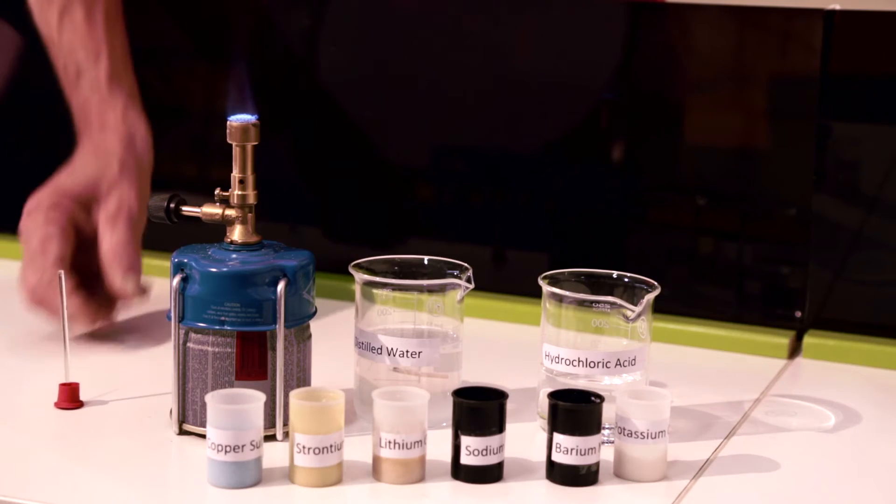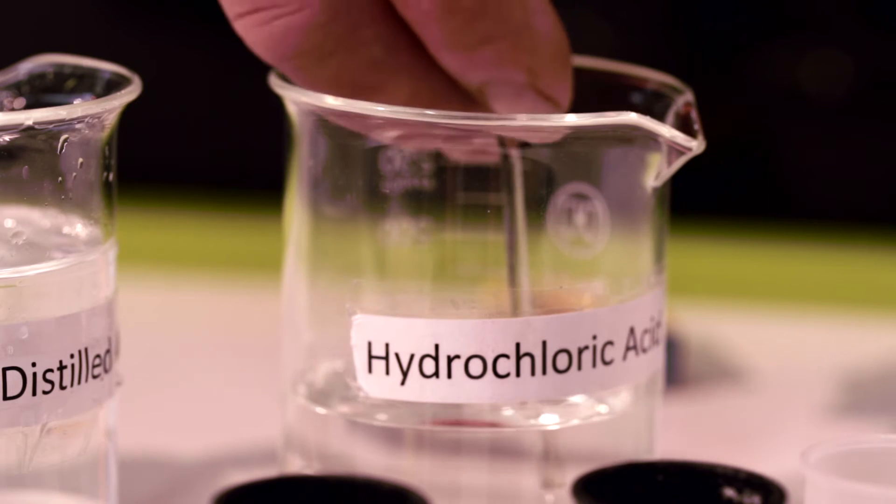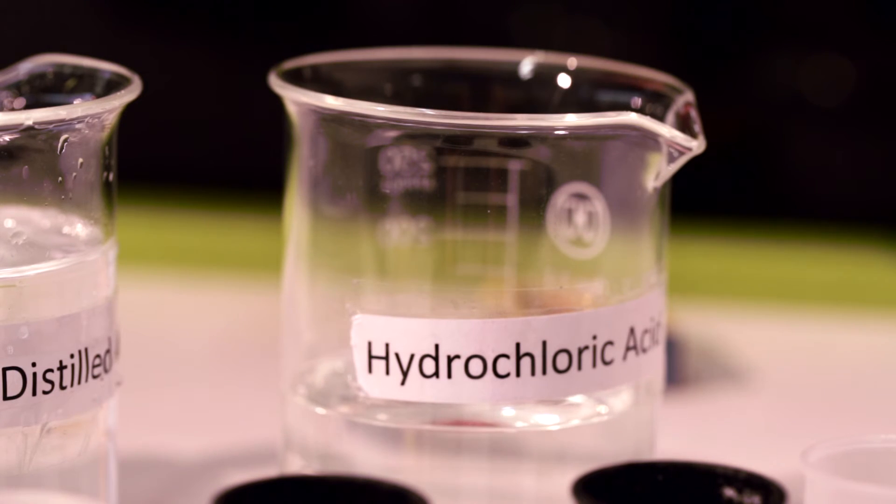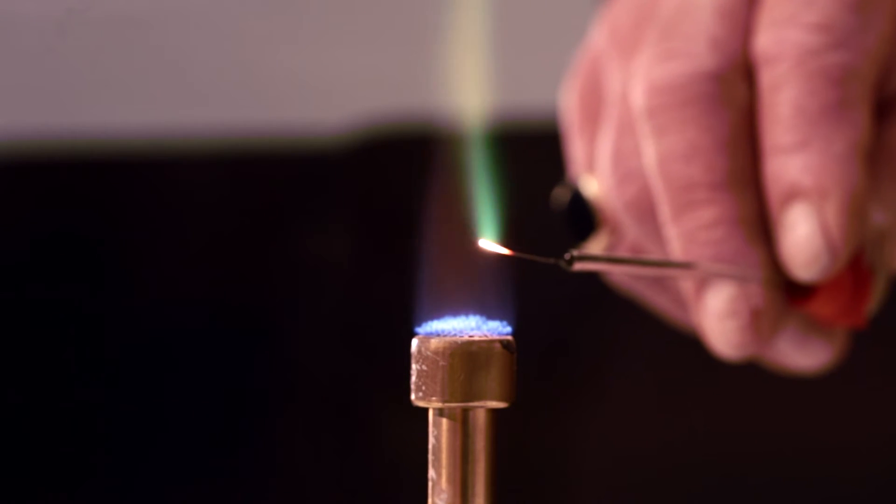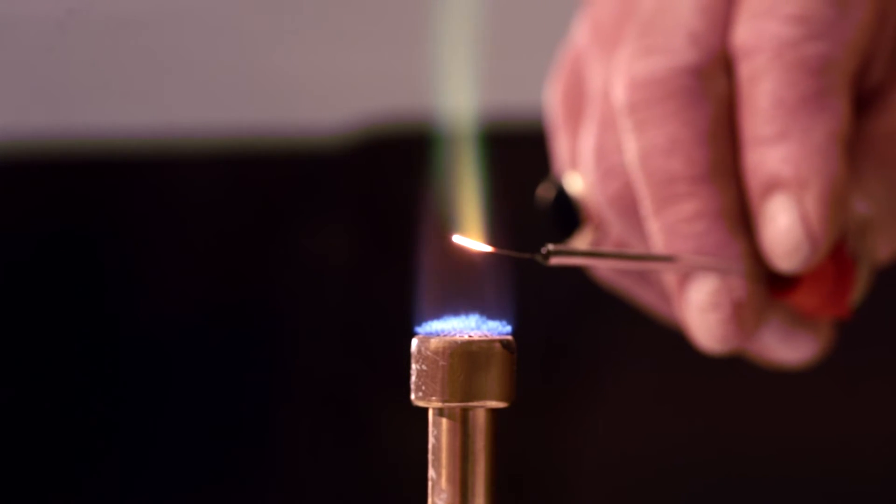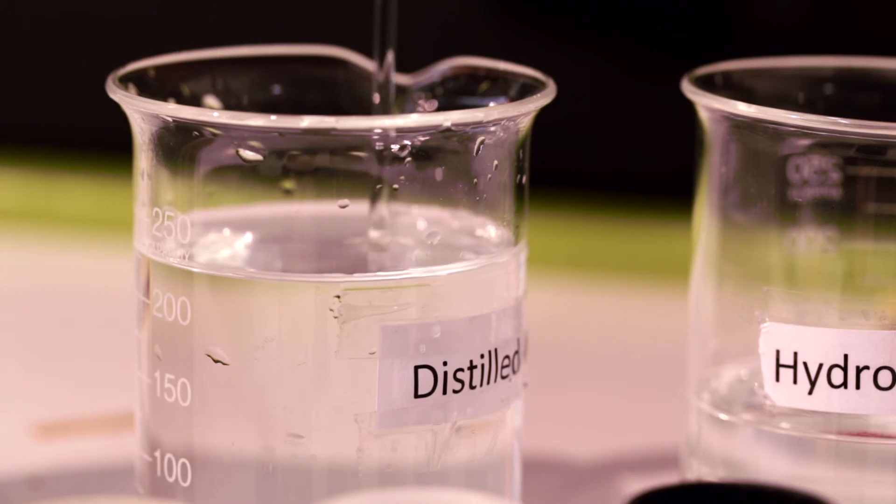Clean a flame test wire by dipping the protruding wire section into a one molar hydrochloric acid solution. Hold the wire section in the hottest part of the flame for 10 seconds. Repeat and rinse in distilled water.